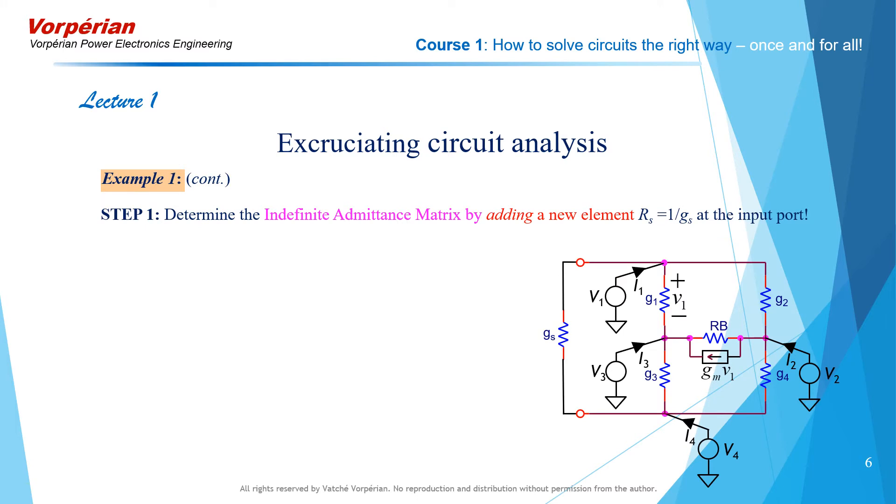Here are now the steps of parameter extraction using the method of nodal analysis. Step 1: Determine the indefinite admittance matrix by adding a new element Rn at the input port. From the first step, you can already see that this is not going in the right direction. Instead of simplifying the circuit, you are making it more complicated.